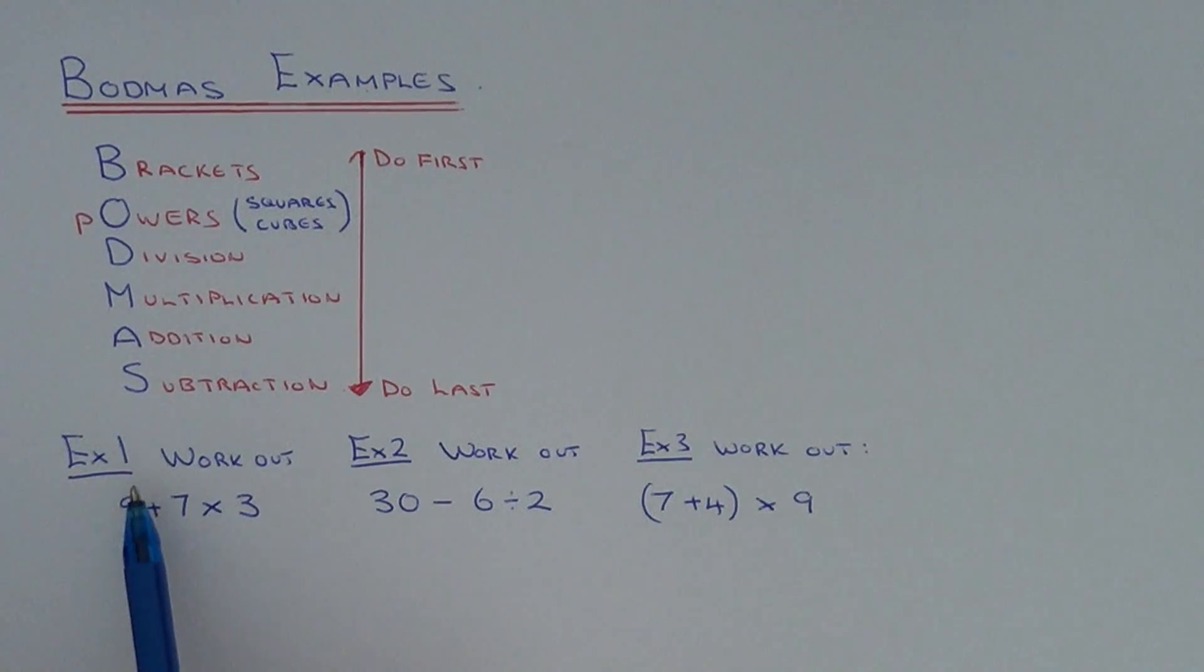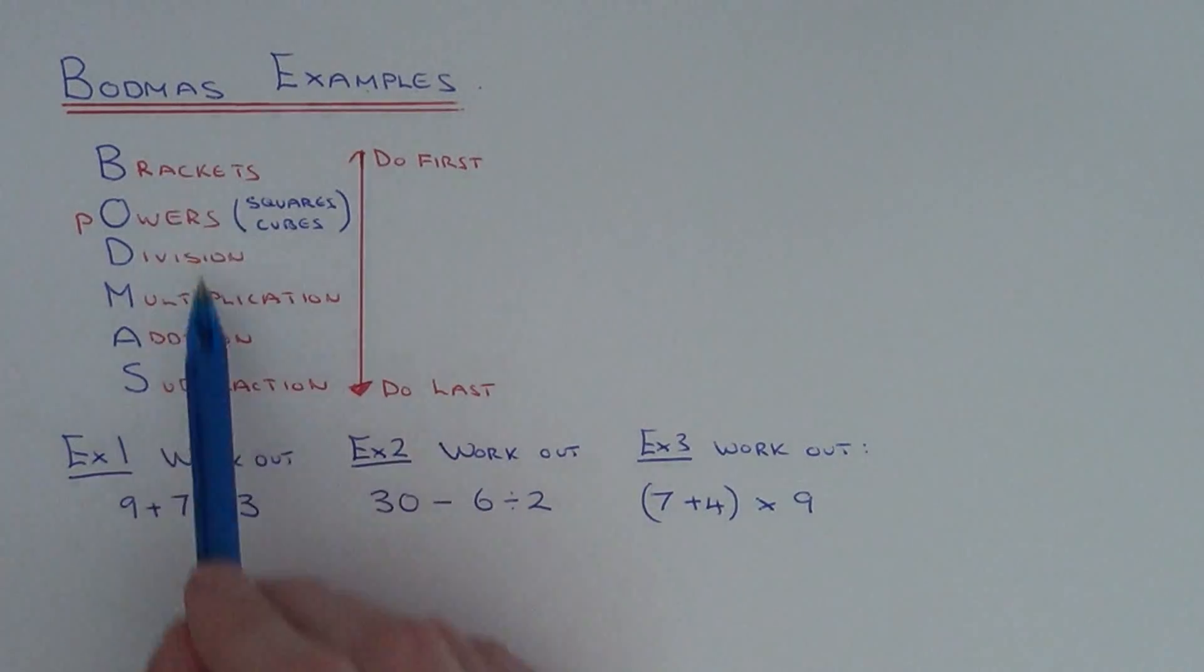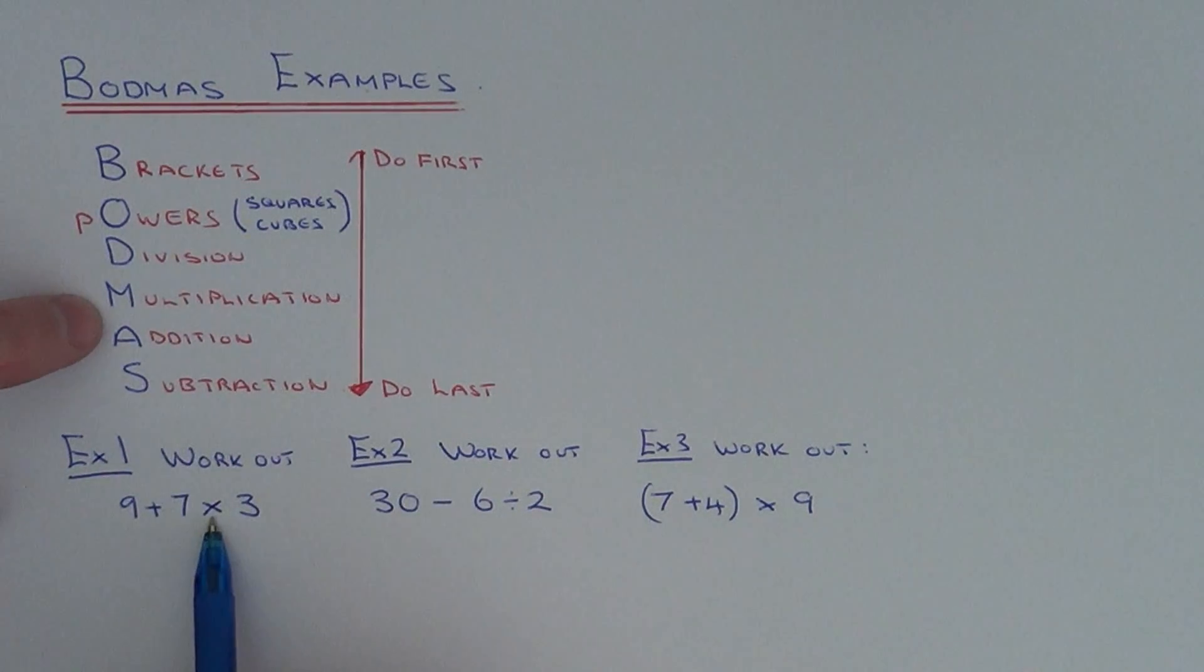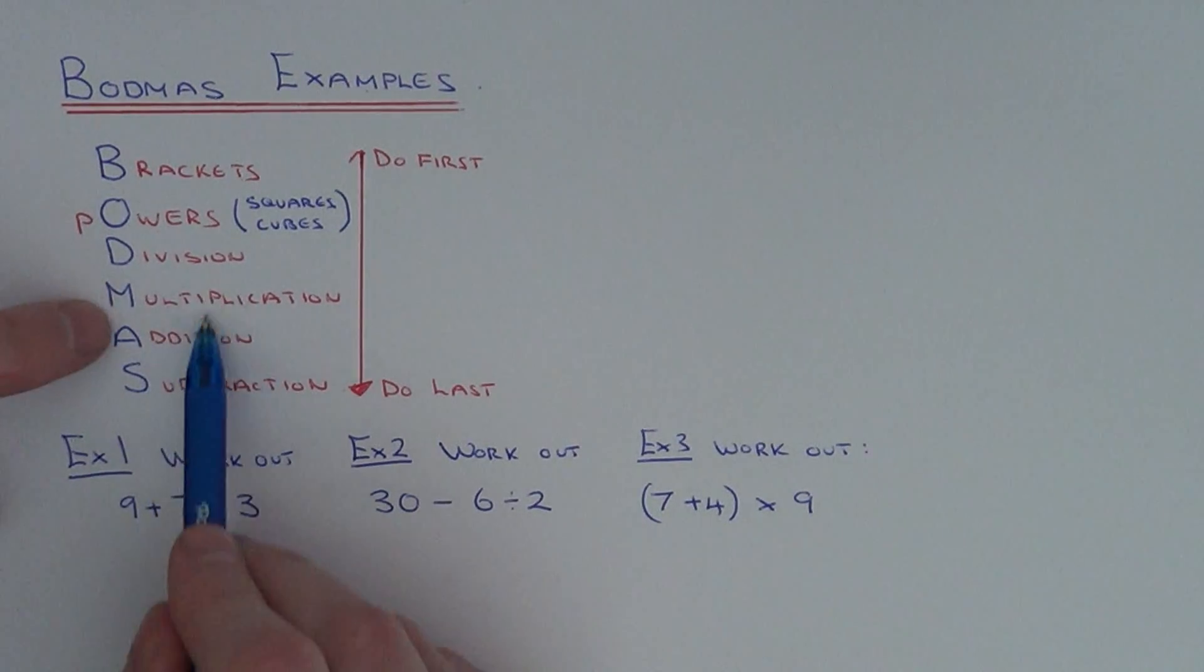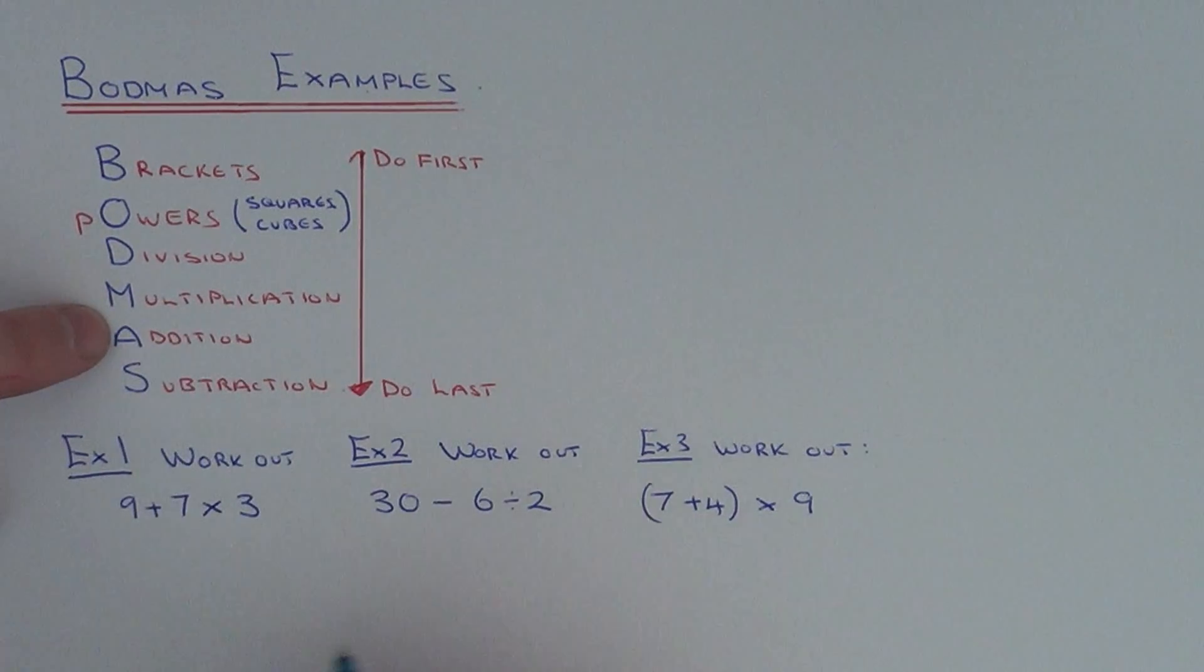Let's look at three examples. In example one we need to work out 9 add 7 times 3. Do we do the 9 add 7 first or the 7 times 3? Let's look at our word Broadmass. As you can see multiplication is above addition, so that means we do the multiplying part first of all. So we have to work out 7 times 3.